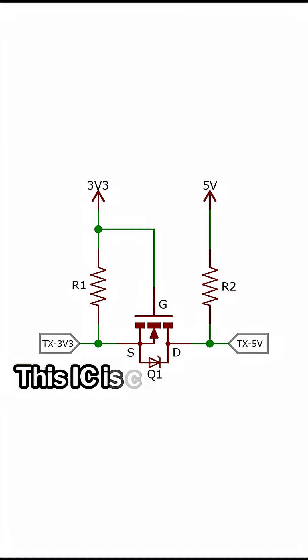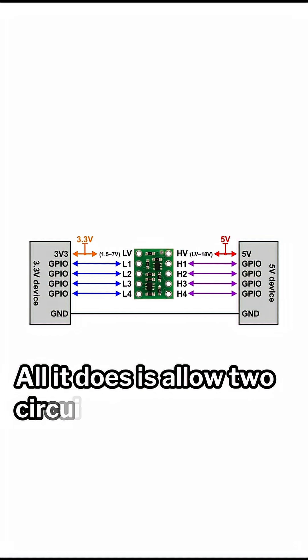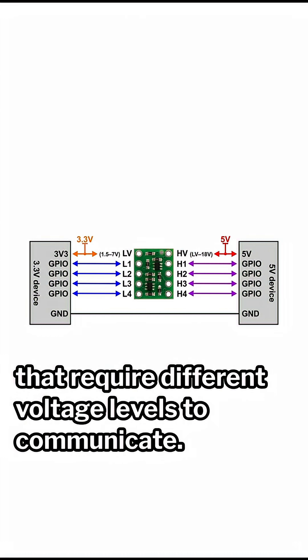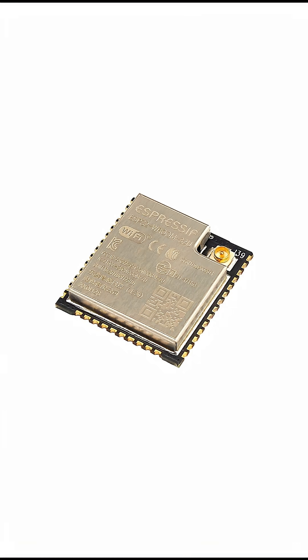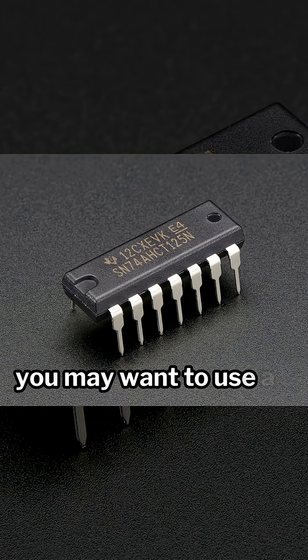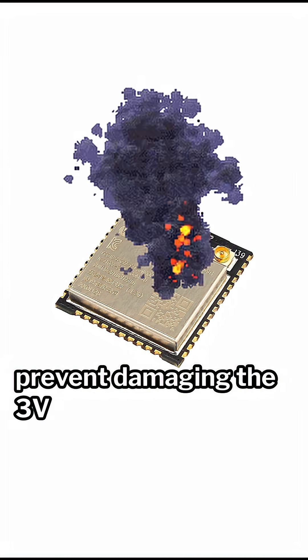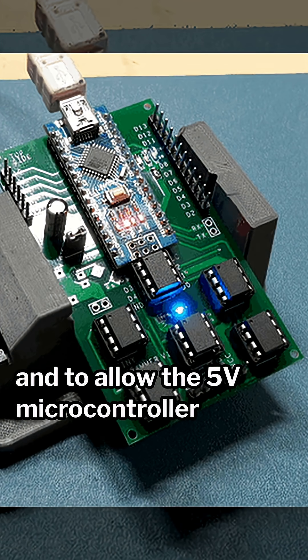Number seven: level shifter. This IC is conceptually simple. All it does is allow two circuits that require different voltage levels to communicate. So if you have a 5-volt tolerant microcontroller and you want it to communicate with a 3-volt tolerant microcontroller, you may want to use a level shifter to prevent damaging the 3-volt microcontroller and to allow the 5-volt microcontroller to register the signals.